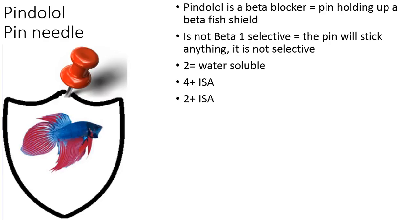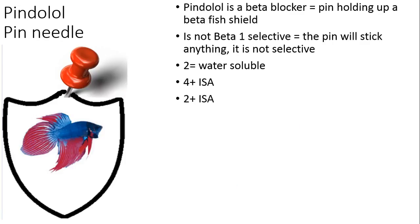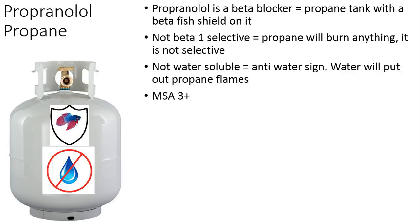Pindolol kind of sounds like 'pin needle,' so this is a pin needle holding a picture of the beta fish — it's a beta blocker. It's not beta-1 selective; pins can stick anything to the wall, so this pin is not selective. It has four-plus ISA and two-plus MSA — sorry, I misspoke: four-plus MSA and two-plus ISA.